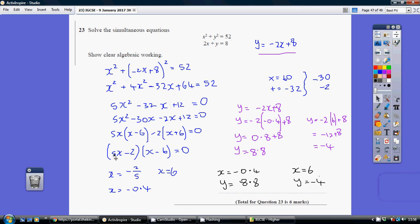And therefore my values for x are minus 2 fifths and plus 6, minus 2 fifths being minus 0.4. So there are my x values.